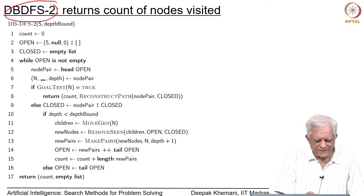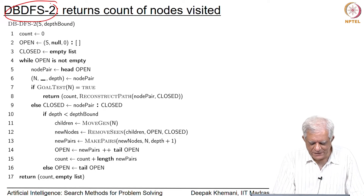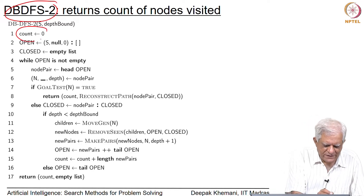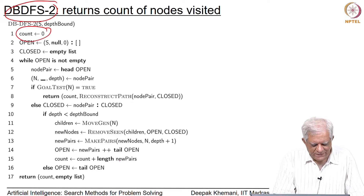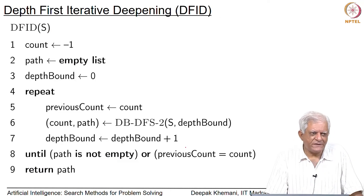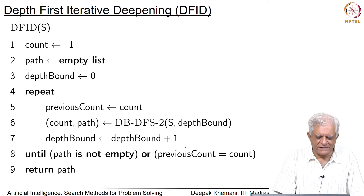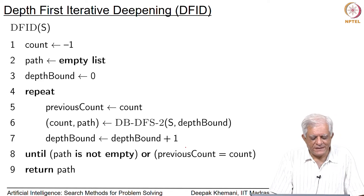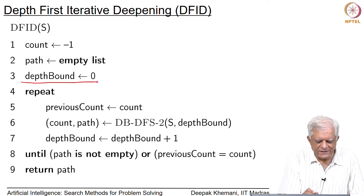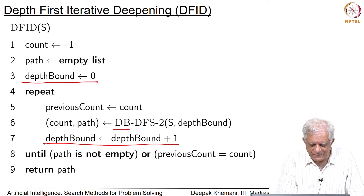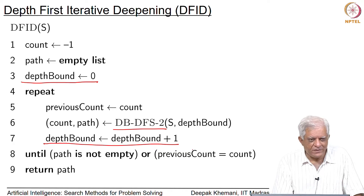What db-dfs-2 does is that it maintains a count of the number of nodes. Initially we say count is equal to 0, and that is the number of nodes it has seen. As we keep processing, we keep adding to the count for the new nodes that we have seen. This gives us a clue for the algorithm that we are interested in, which is depth first iterative deepening. It is essentially a series of depth bounded depth first searches done by increasing the depth bound gradually. We initially say the depth bound is equal to 0, and then as we do a sequence of db-dfs calls, we keep increasing the depth bound by 1.